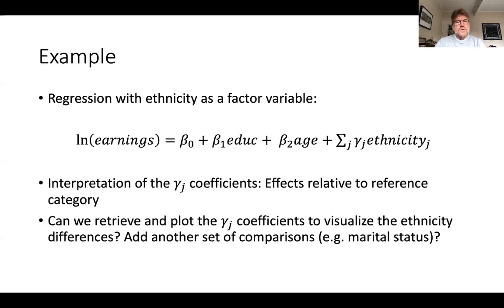Here's the setup using a simple regression equation. We use the log of earnings as the dependent variable, which gives a nice interpretation of the coefficients. We regress that on a measure of education, a measure of age, and then a factor variable with different values for ethnicity — for example white non-Hispanics, African Americans, Asian Americans. We look at those gamma coefficients on the ethnicity dummies, and keep in mind that with factor variables the estimated effects are always relative to some omitted reference category — in this case white non-Hispanic.